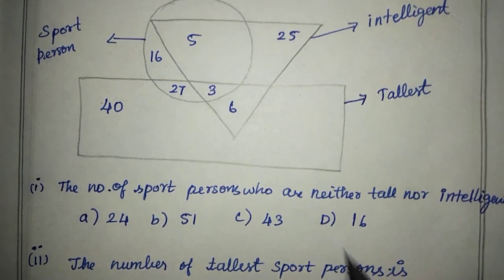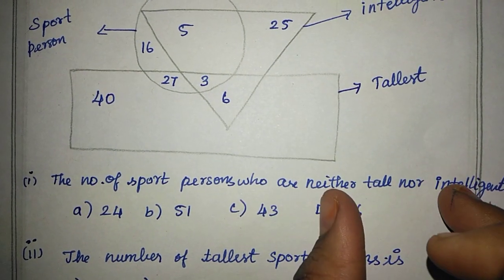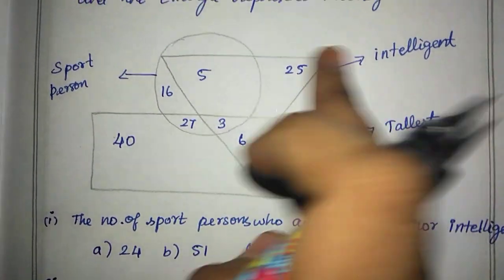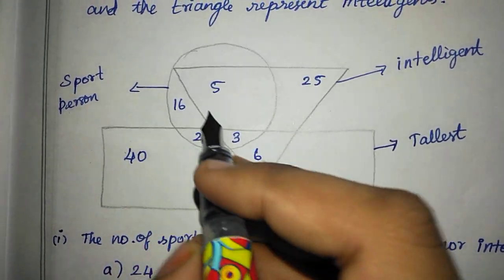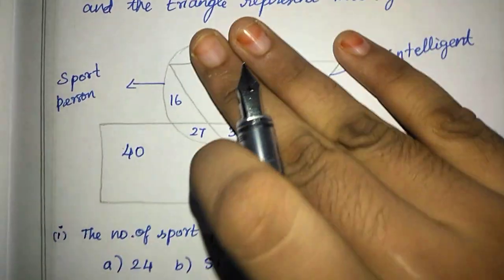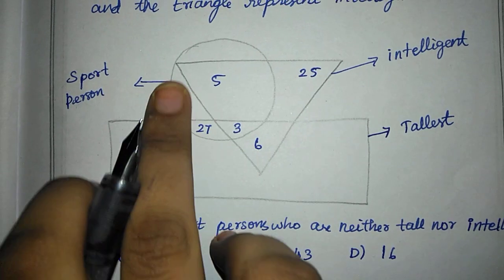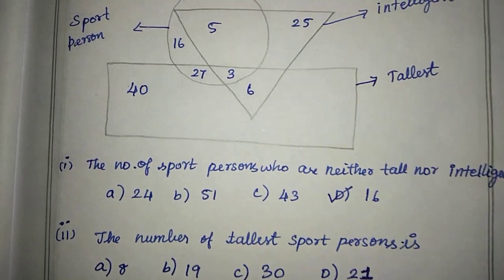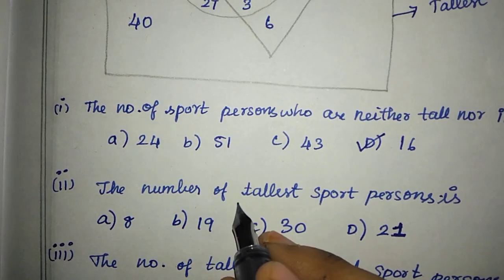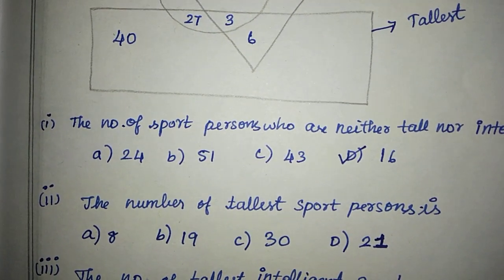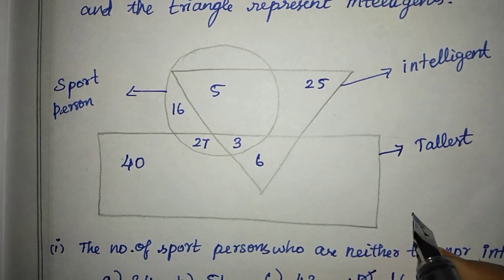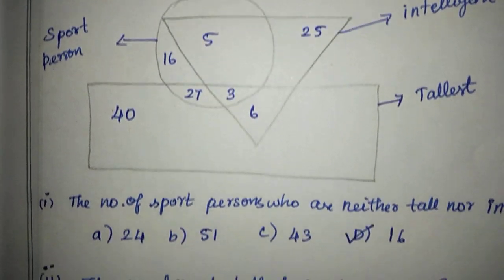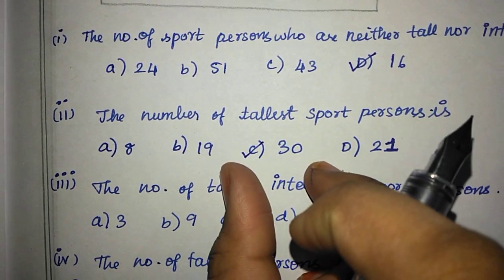Neither tall nor intelligent. So this is the total. The rectangle is not using triangle. The circle is only the circle — not in rectangle nor triangle. A rectangle is neither tall nor intelligent. So option D, 16 — neither tall nor intelligent — this is the right answer. And next: the number of tallest sport persons. Tallest is the rectangle and sport person is the circle. 27 plus 3 equals 30. Option C, 30 is the right answer.